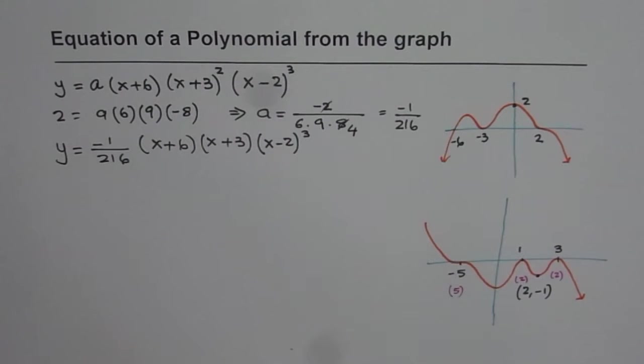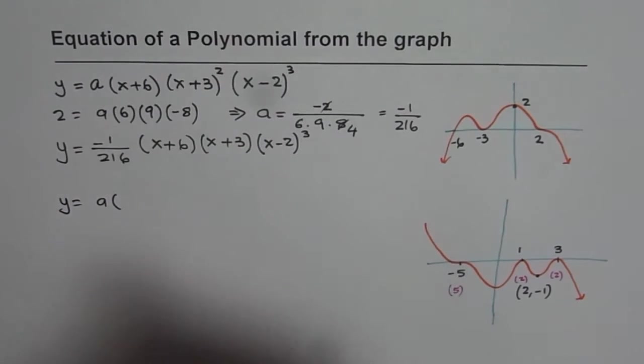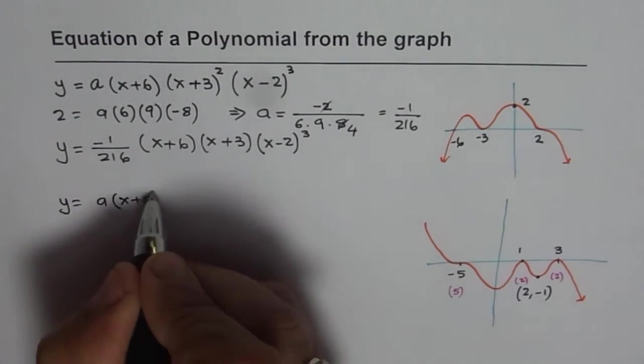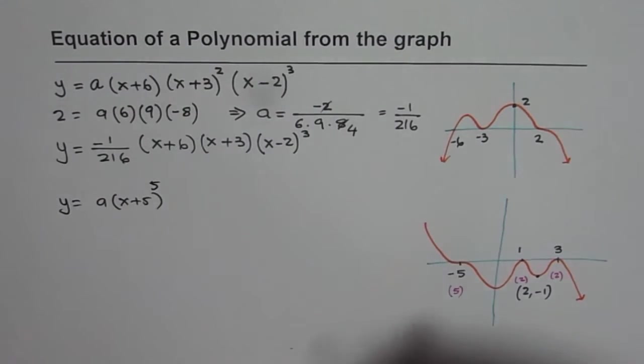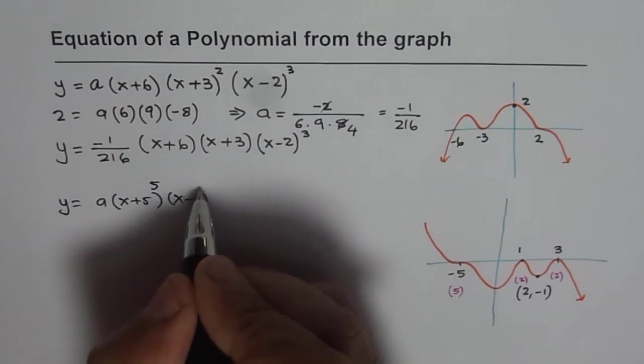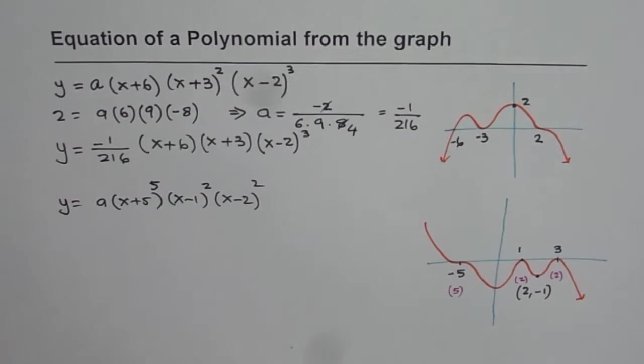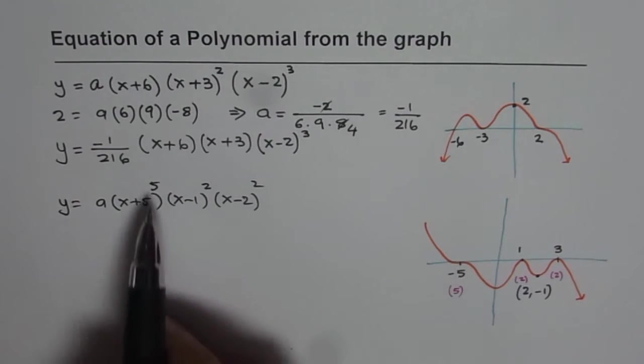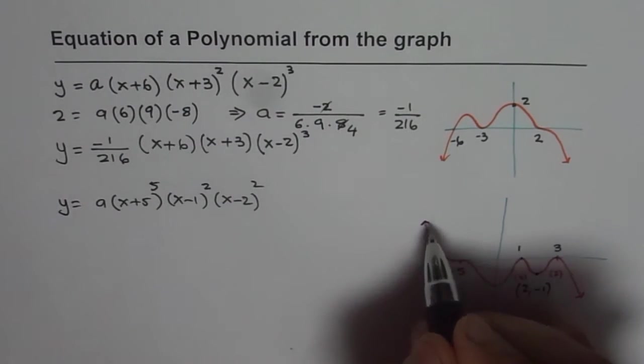In that case find equation of this particular graph. How will you do it? We'll start exactly like we started last time. So let y equals to a times, x plus 5 is the first zero, multiplicity is 5 so that goes in the top. The second zero is at 1, x minus 1 with multiplicity of 2. The third one is at 3, x minus 3 with multiplicity of 2. So 5 plus 2 plus 2 is 9 degree function, it makes sense. Odd degree function so they are facing the opposite ends.